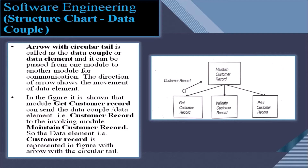The next symbol is used for a data couple. An arrow with a circular tail is called a data couple or data element, and it can be passed from one module to another for communication. The direction of the arrow shows the movement of the data element. For example, the module 'get customer record' sends the data element — customer record — to the invoking module 'maintain customer record', represented by an arrow with a circular tail.